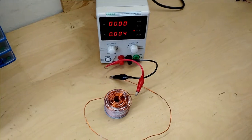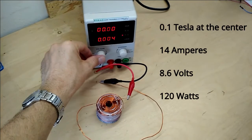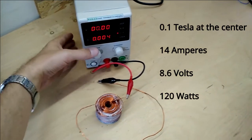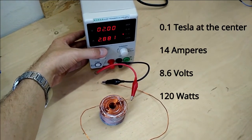The total voltage drop was 8.6V which results in 120W of ohmic loss.